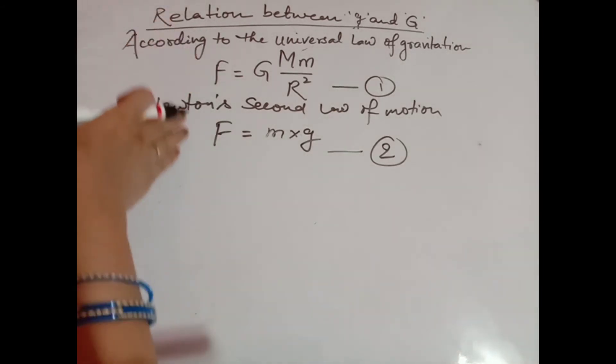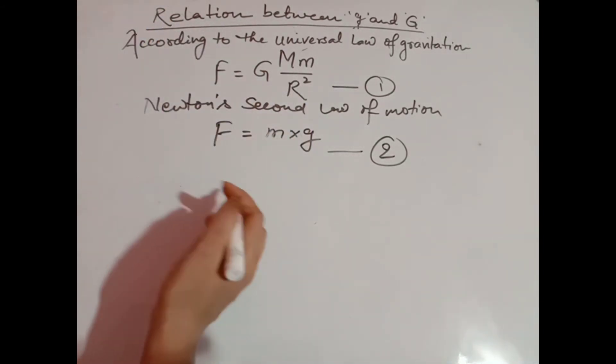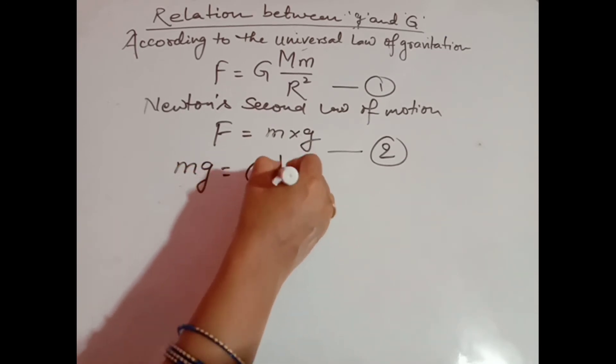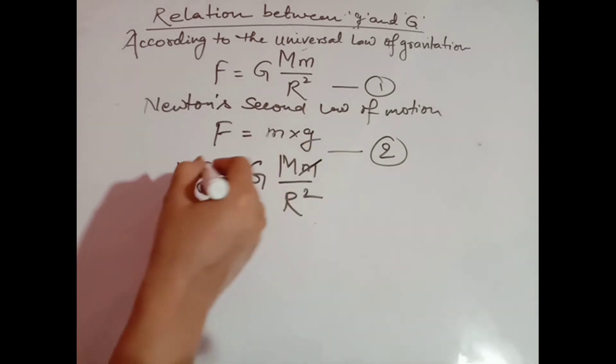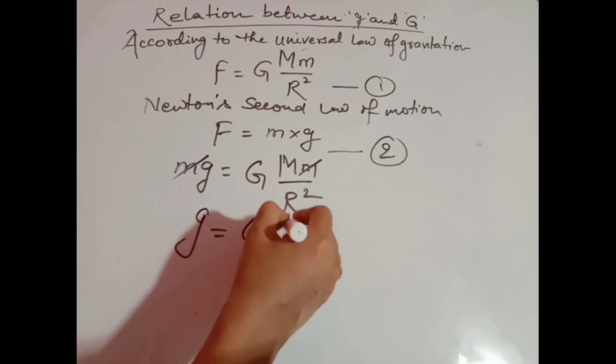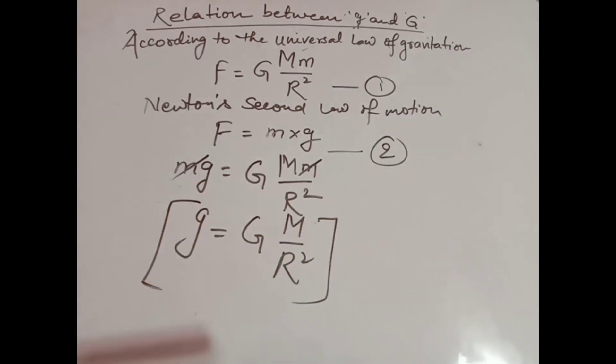Now equate your equation one and two. The left side, as you see, both are forces. So we can write from equation one and two: mg is equal to GMm divided by R square. This small m will cancel and finally we got the equation g = GM/R².